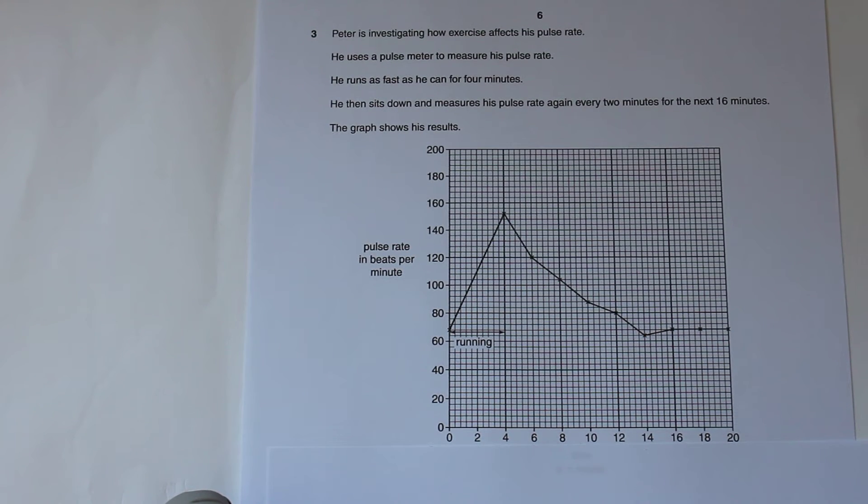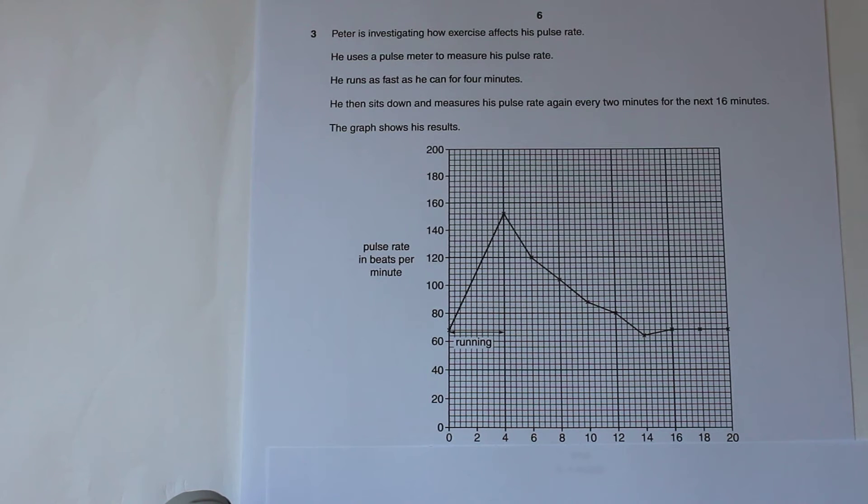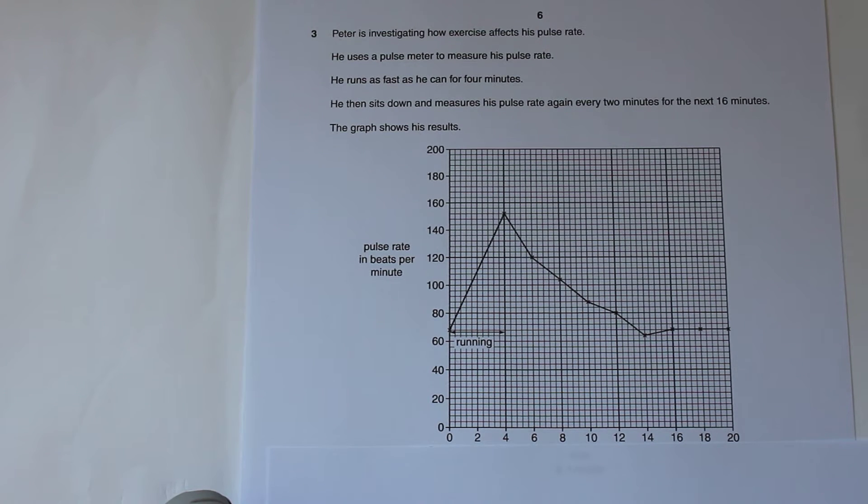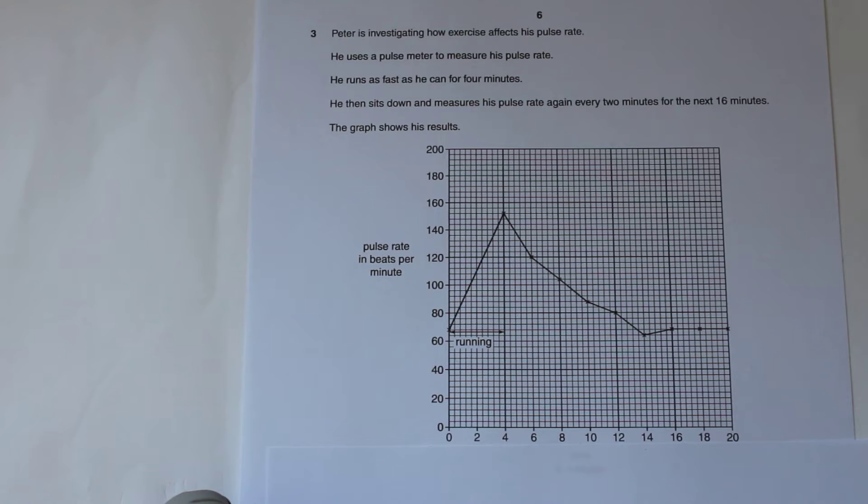Welcome to our review on six mark questions for the foundation tier, this time looking at a B3 example which requires us to describe and explain patterns in a graph. When we're looking at ones like this, they can occur in biology, chemistry, or physics. They all follow a very similar theme of describing and then explaining patterns that we can see in a graph.